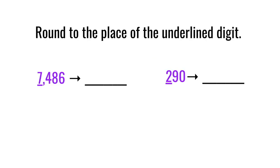Let's try some more problems. For the next one we have 7,486 and we're rounding to the underlined digit, which is a seven in the thousands place. We circle the underlined digit and look next door — our next door neighbor is going to tell us if we have the power to bump the seven up to an eight, or tell the seven to just stay a seven.